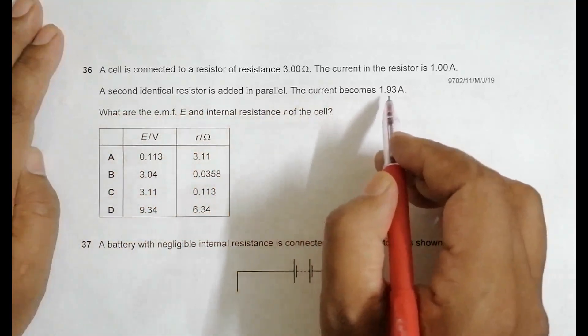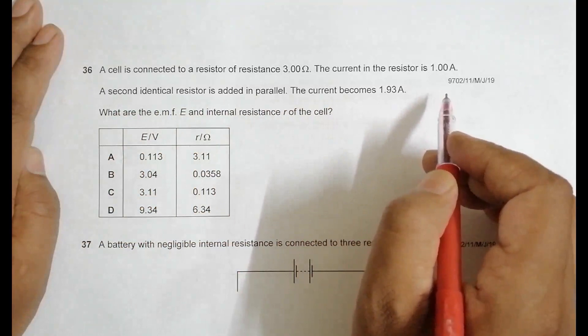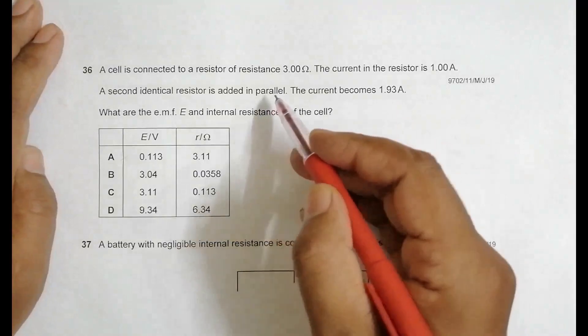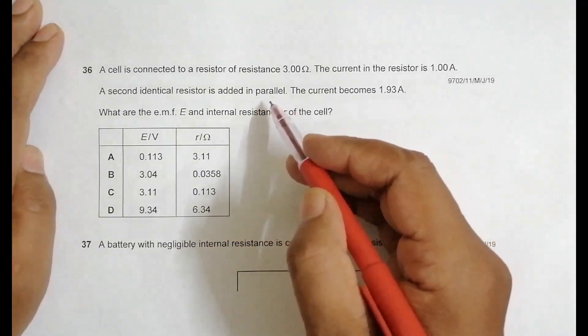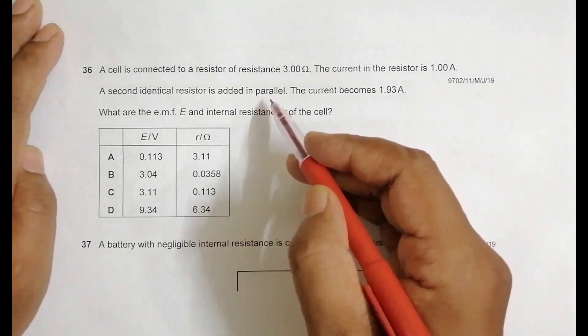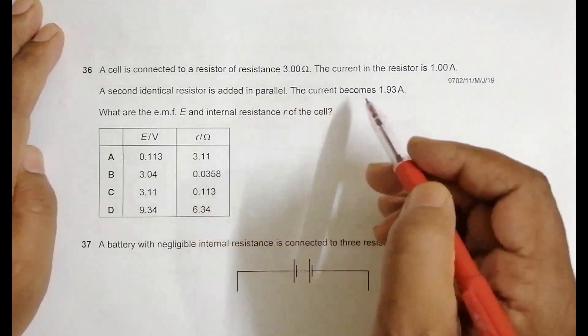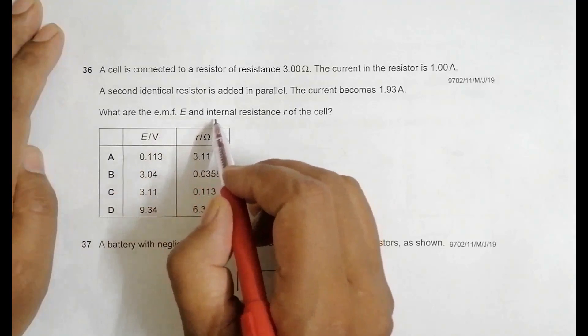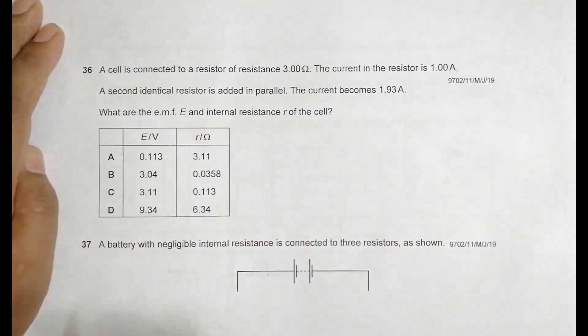The current becomes 1.93 ampere. When you add a second resistor, the current increases. Of course, when we connect a resistor in parallel, the total R decreases, which means the current increases to 1.93. What are the EMF E and the internal resistance r of the cell?